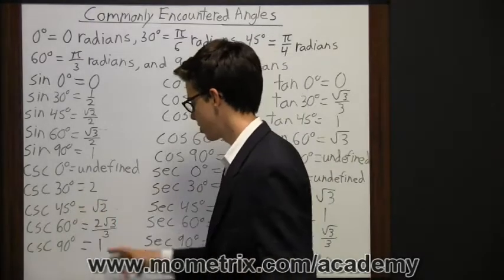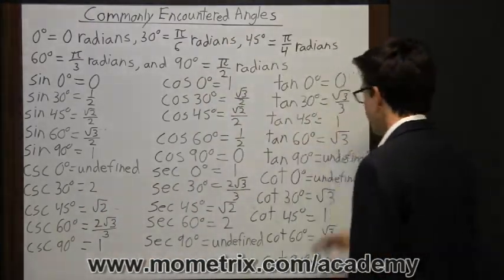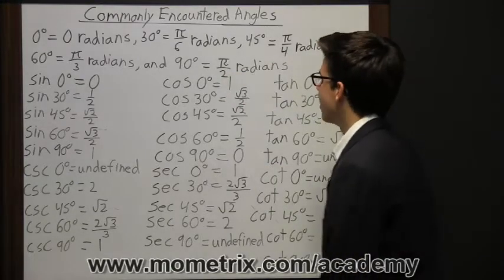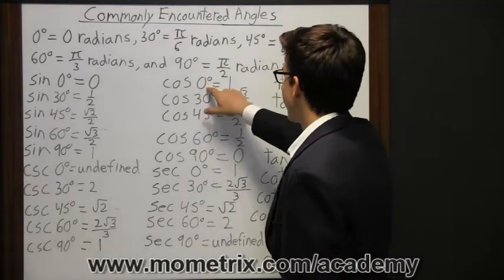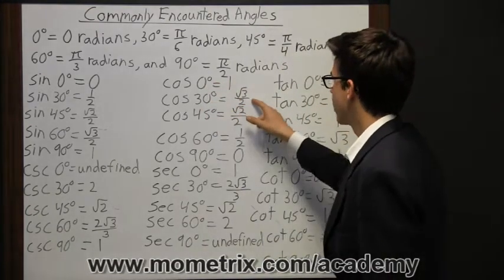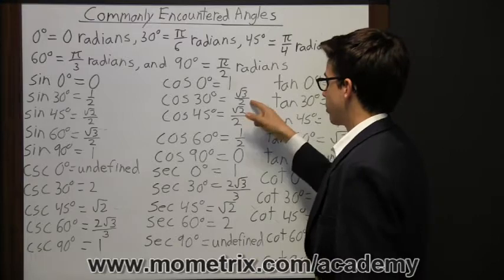Since there's so much information here, I'm going to go ahead and not talk about the reciprocals. The information is up here, but like I said earlier, the important stuff's on the top, so I'm going to focus on that. So now we transition to cosine. Cosine zero degrees is equal to 1, cosine of 30 degrees is equal to square root of 3 over 2.